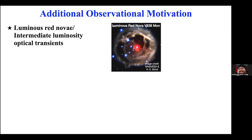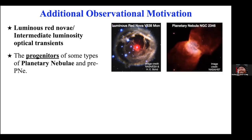Some people think luminous red novae are what we see when the two cores merge; others think we see this sort of thing whenever we have a common envelope event happening. Common envelopes are also important for the progenitors of planetary nebulae. Any planetary nebula with a bipolar morphology probably had a common envelope phase at some point in its evolution, and you sometimes see a tight binary star at its center that's left over.